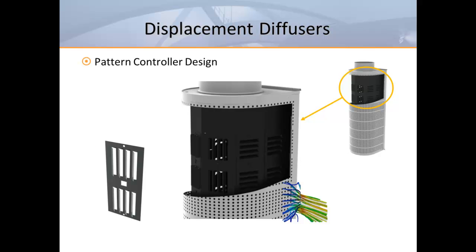Diffusers with adjustable air pattern controllers typically ship out in a default position that provides a standard radial air pattern. In order to allow easy access for field adjustment, the faceplates must be removable. Although diffusers with this feature are designed to be adjustable, it's still advisable to make product selections based on the standard radial pattern.